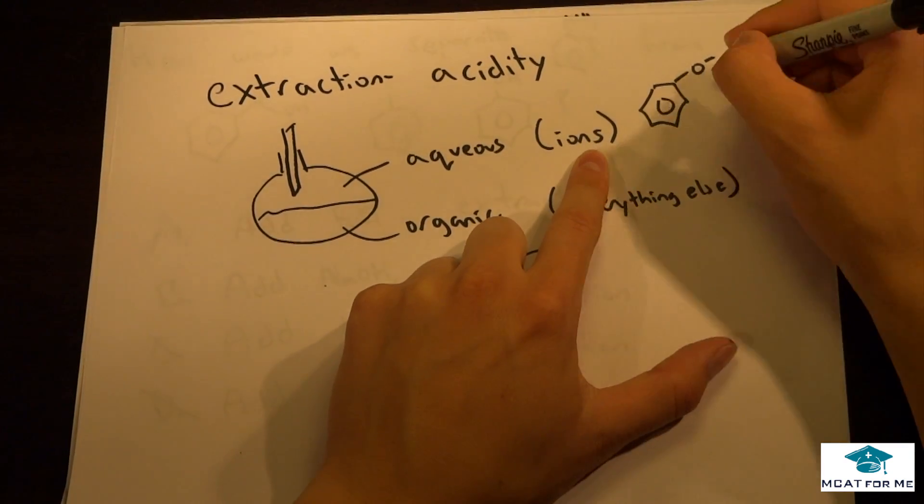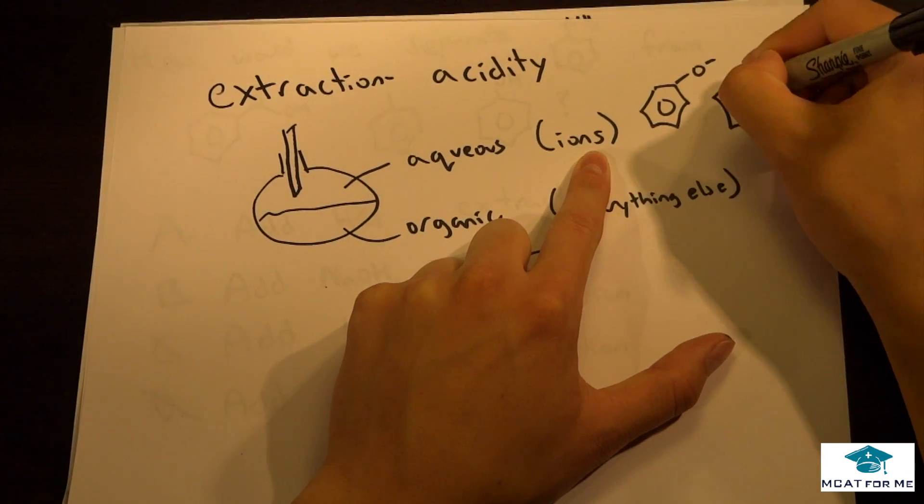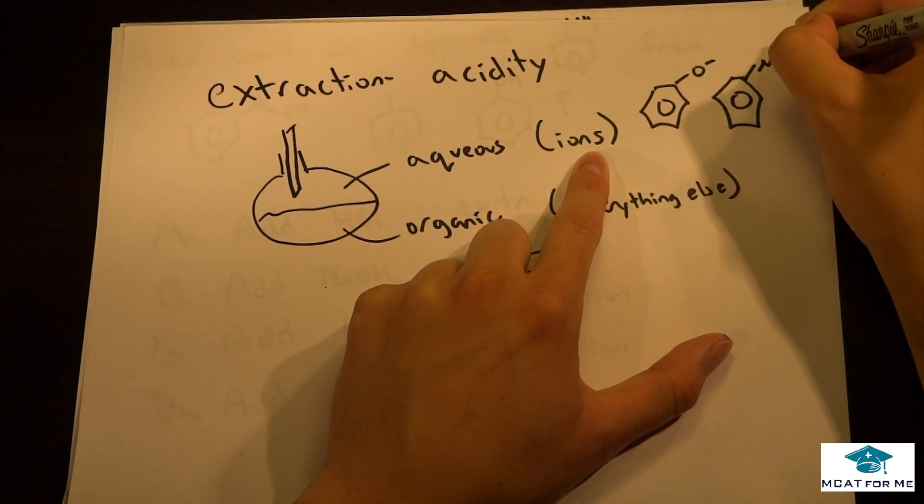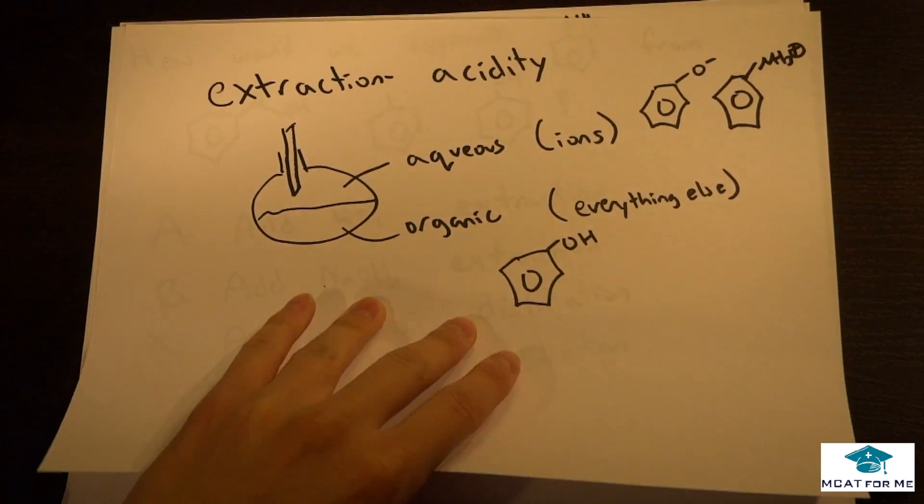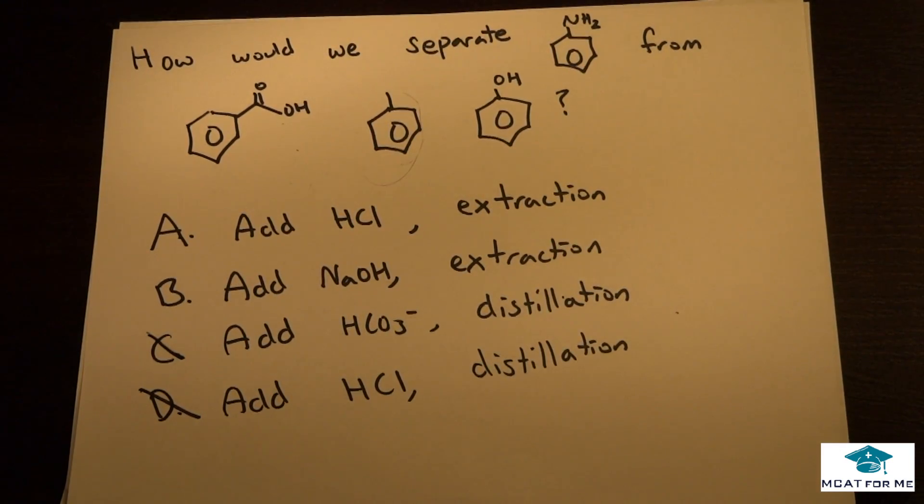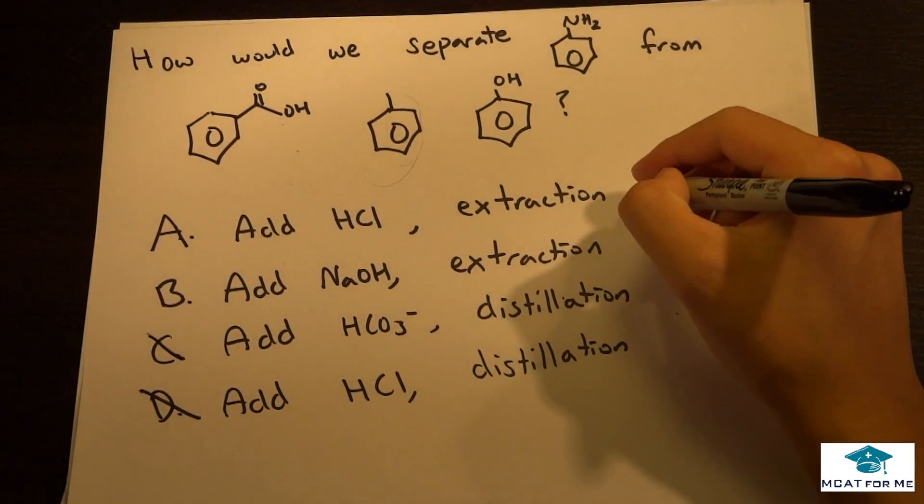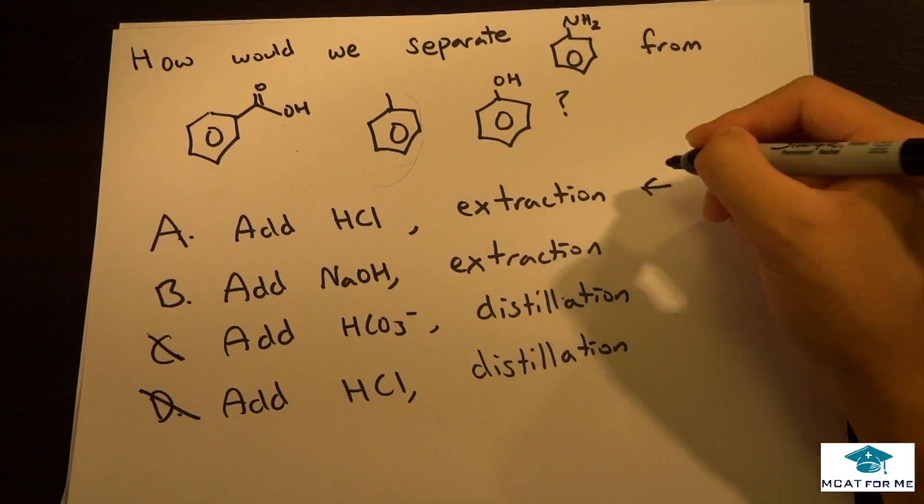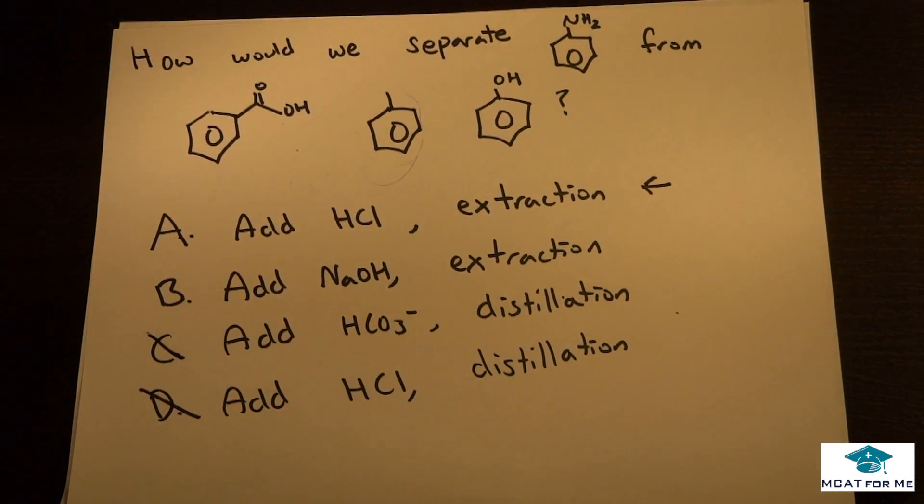So for example, the NH3+, would be in the aqueous layer. And we could suction that out and then separate it. So from this, we know that adding HCl to the mixture would separate aniline from the rest.